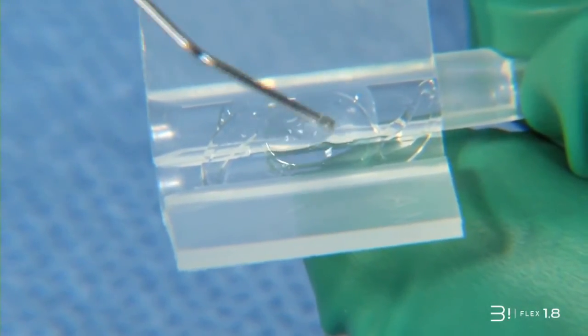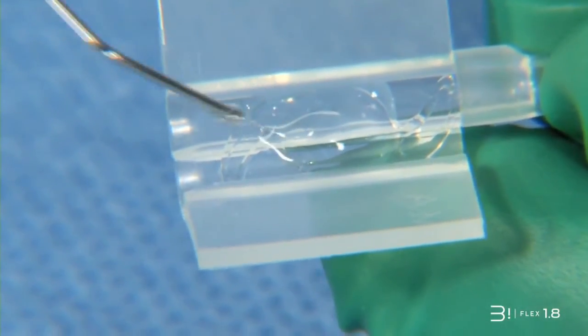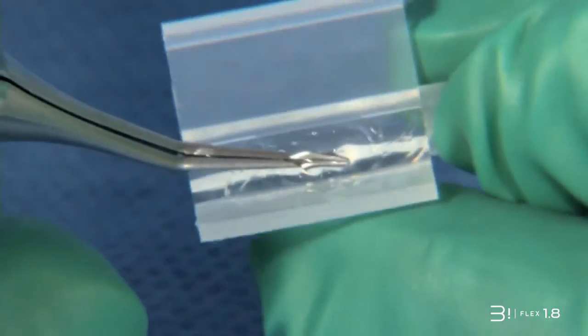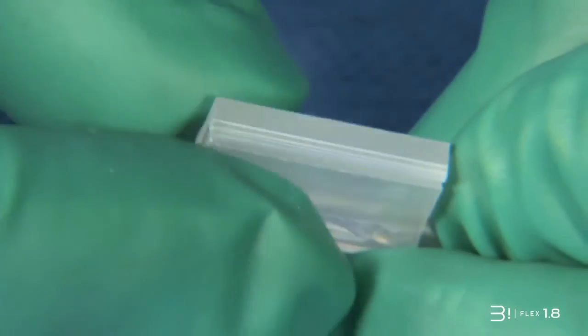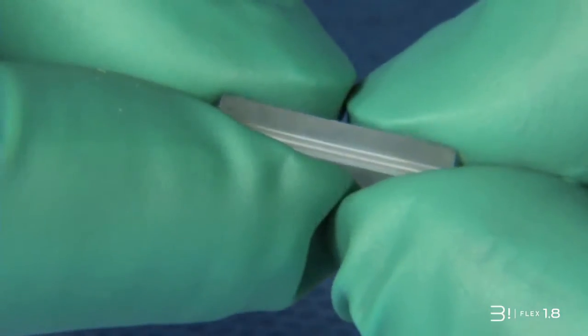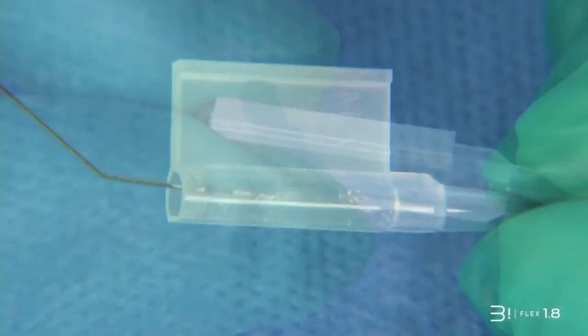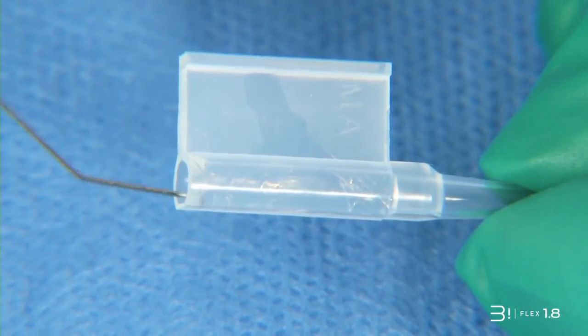Add a bit more viscoelastic gel above the lens. Close the cartridge. Be sure the implant does not move and inject some visco gel into the cartridge on both sides.